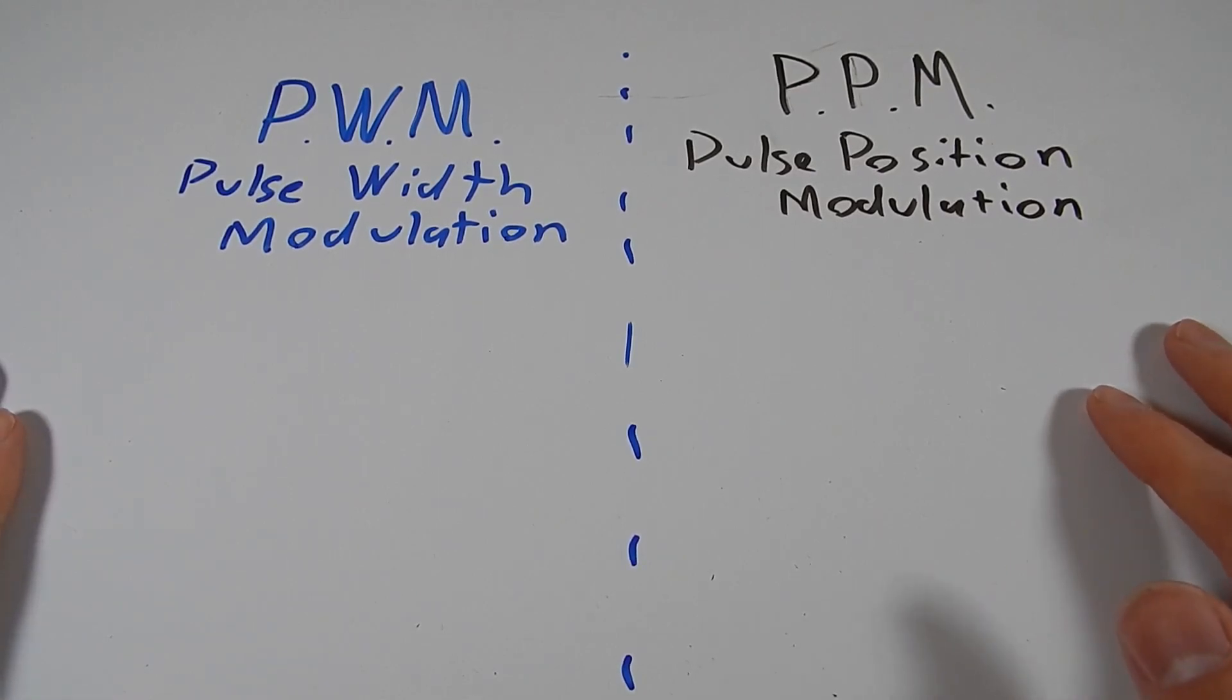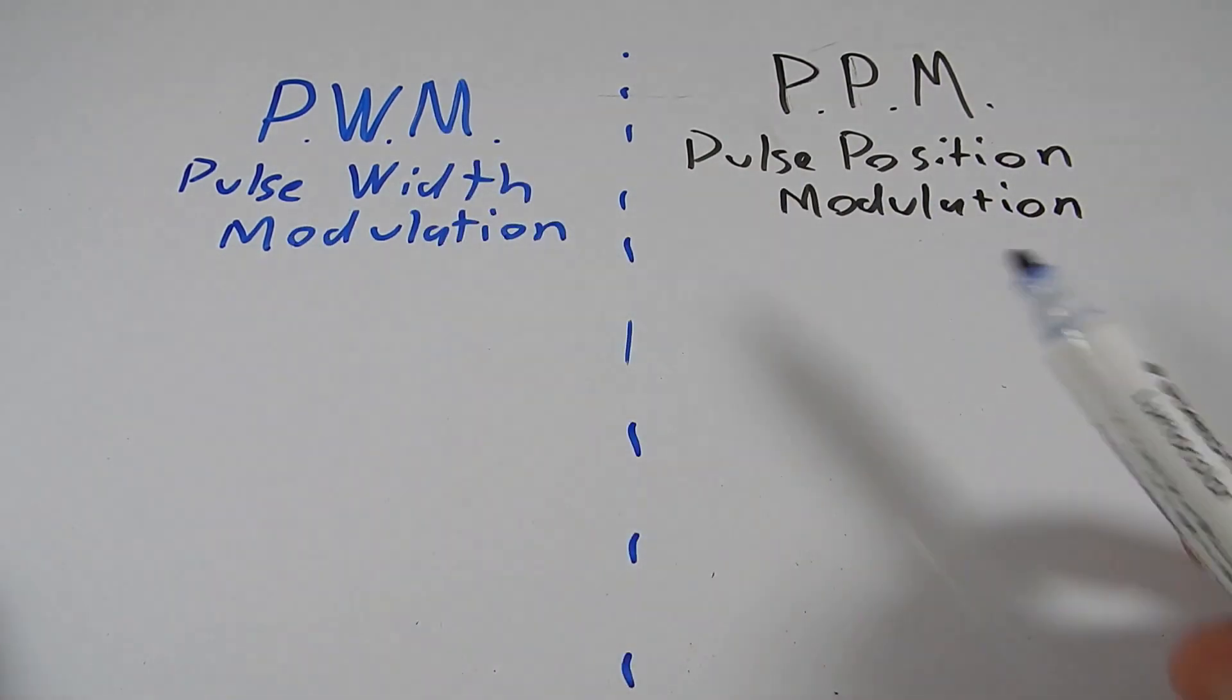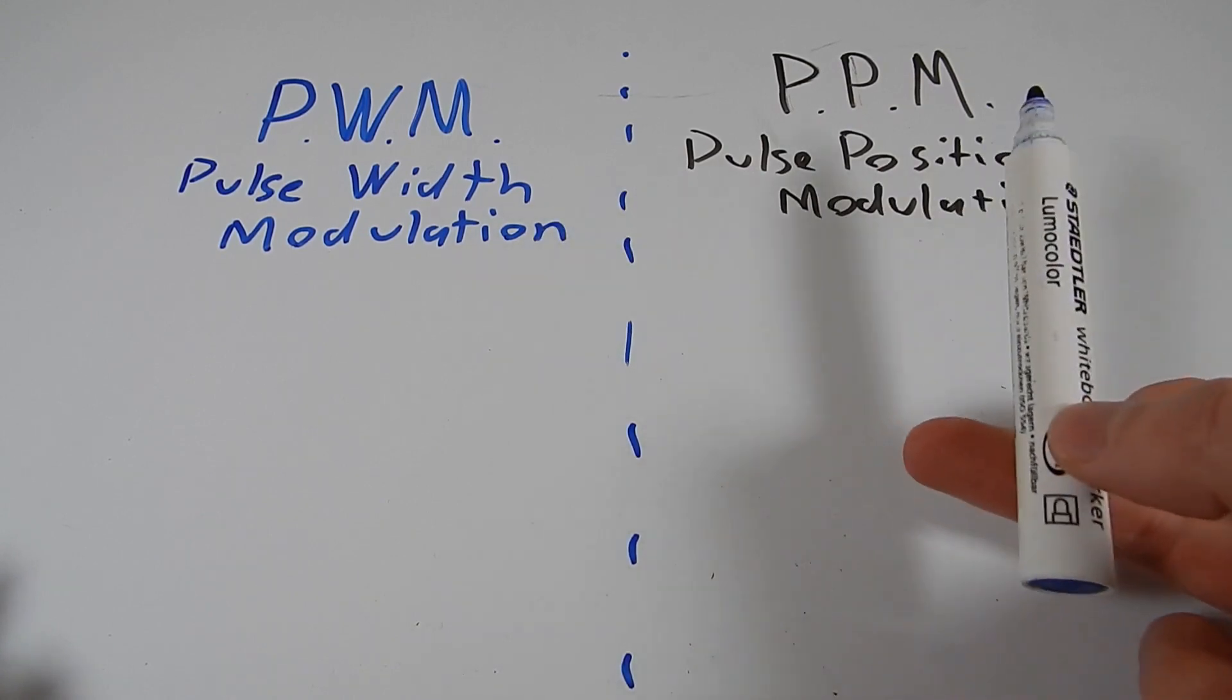Hello everybody, I am Ben from Team Panic and today we're going to be talking about the building blocks of ESCs and motor control. So in front of me right here we have two distinct concepts. One is PWM and one is PPM.